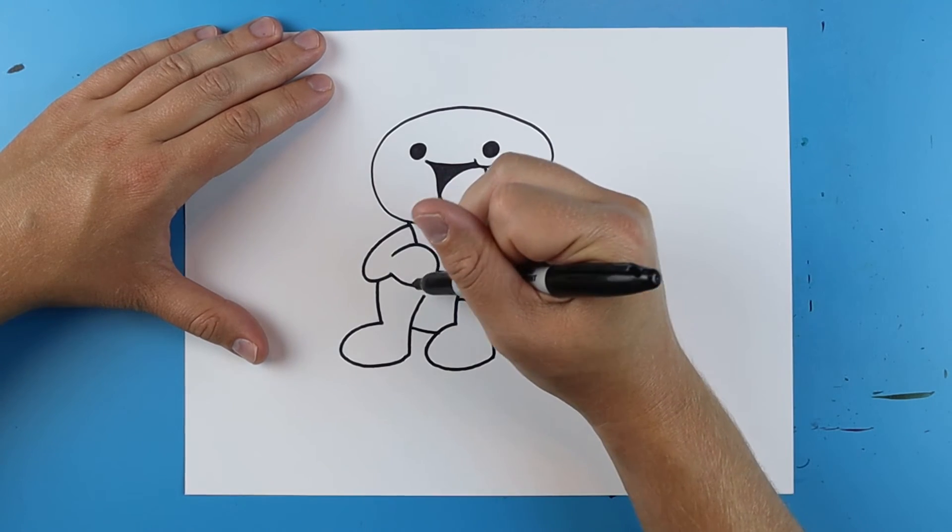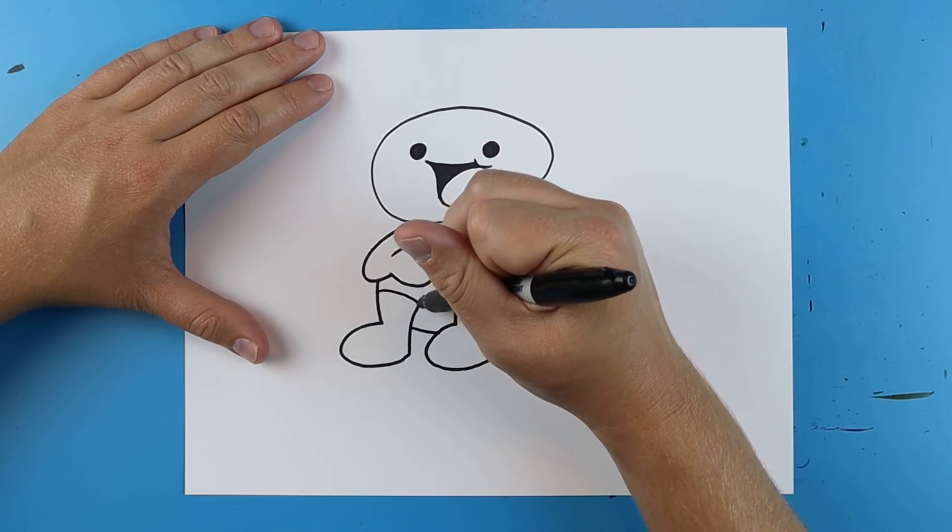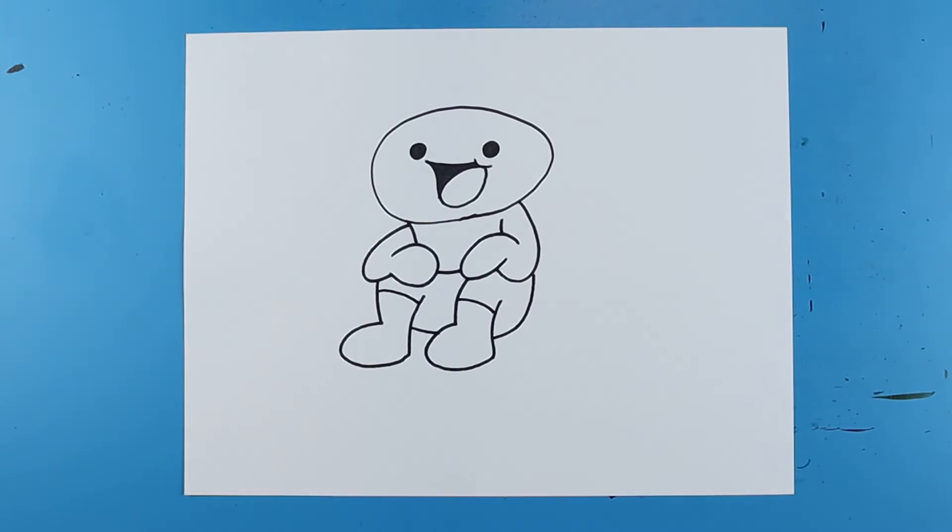Next, just add a curved line here and a curved line right here for the shorts. And there you go. There is your drawing of the odd ones out. I'm going to fast forward and start coloring this. Thanks for watching. Hope you guys enjoyed.